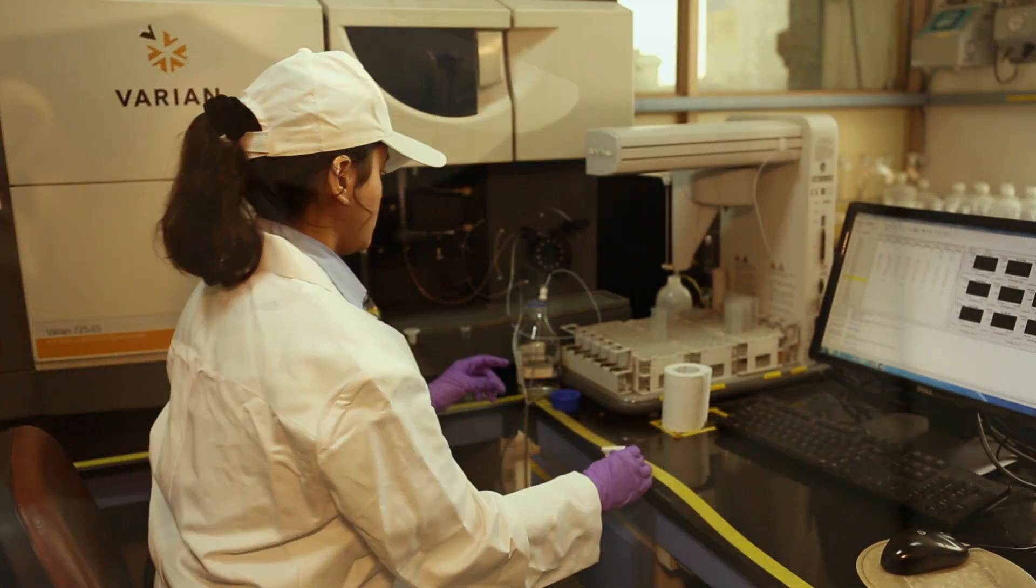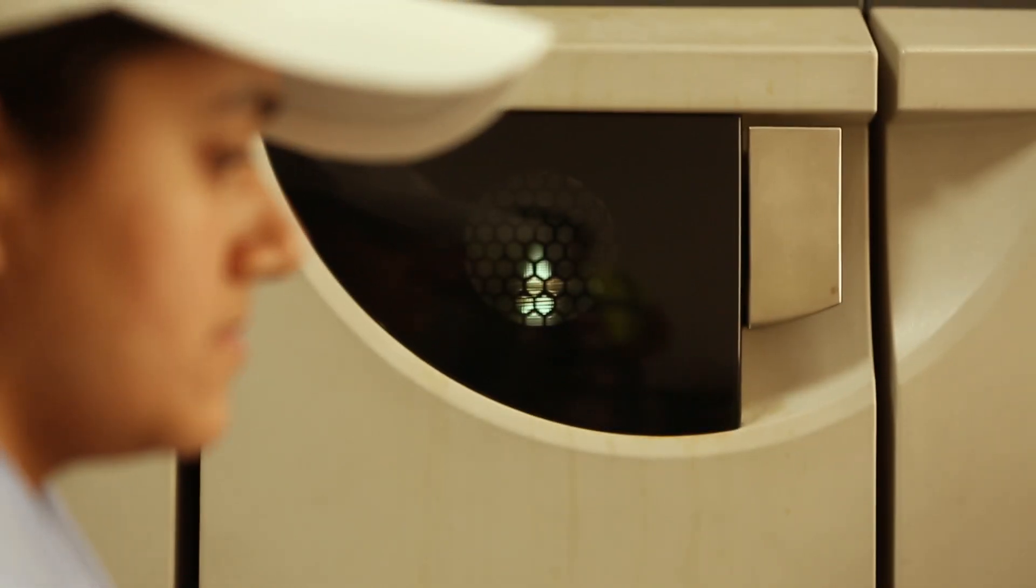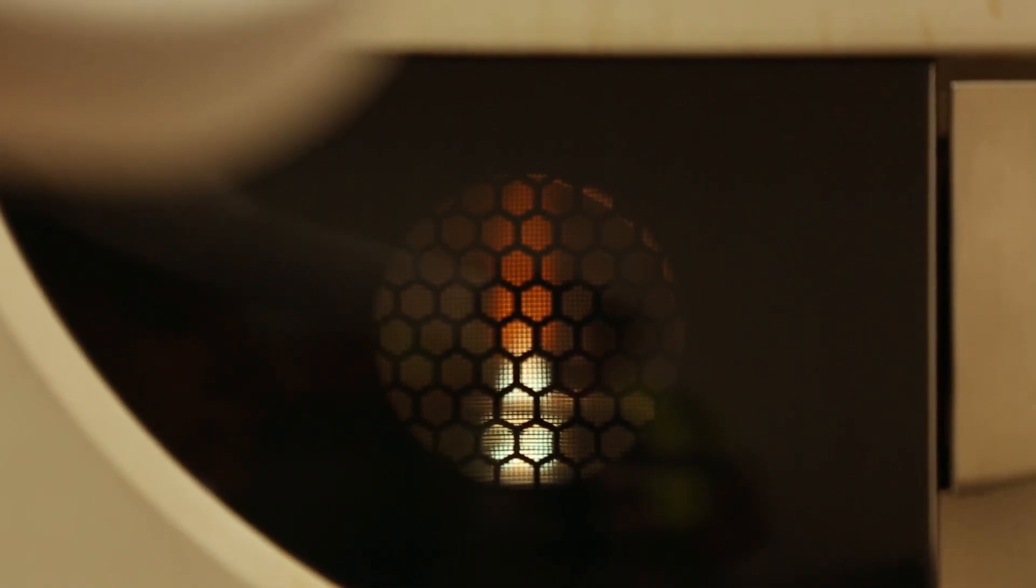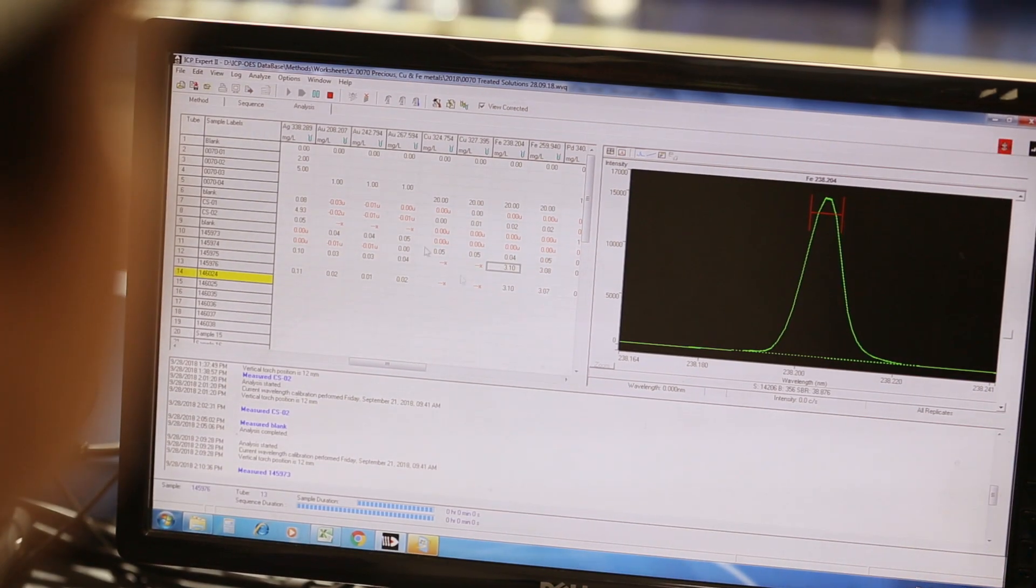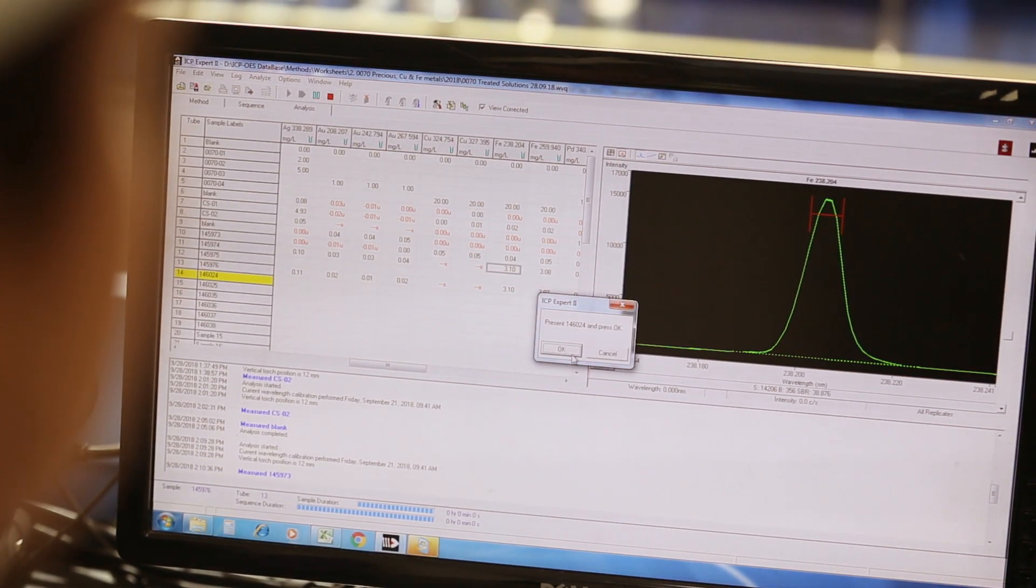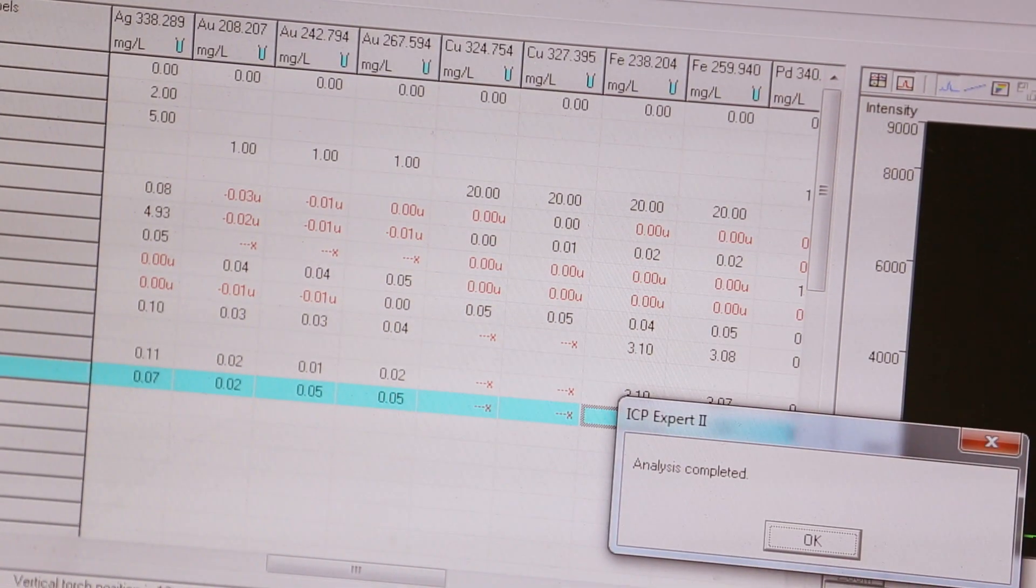During ICP spectroscopy, high energy plasma is generated by highly charged ionized argon gas. This provides the energy for absorption spectroscopy which is the basis of quantitative analysis. It is a highly sensitive technique that can determine purity down to parts per billion.